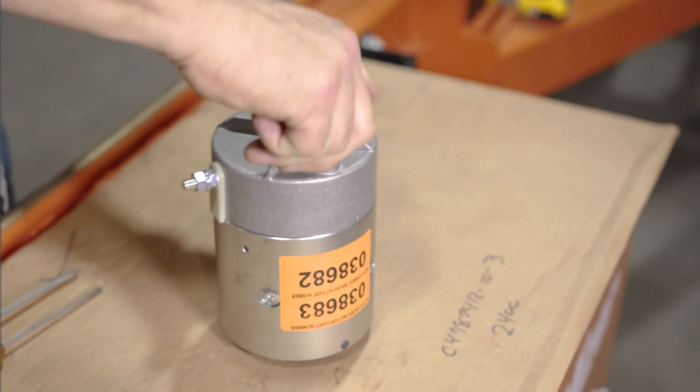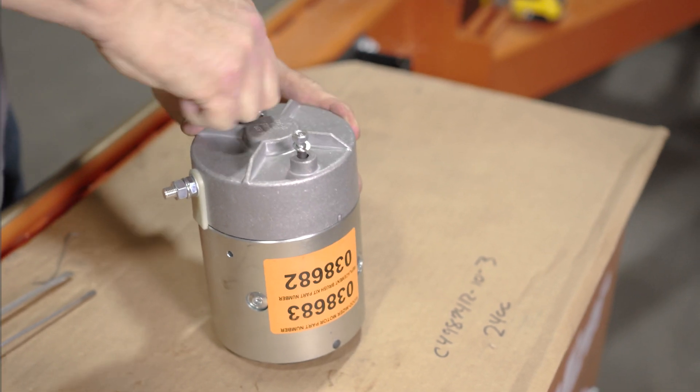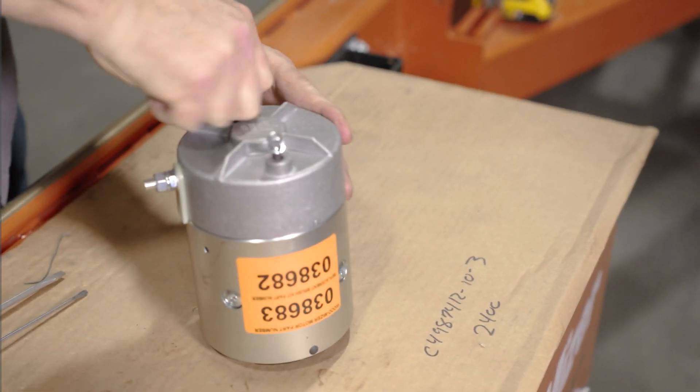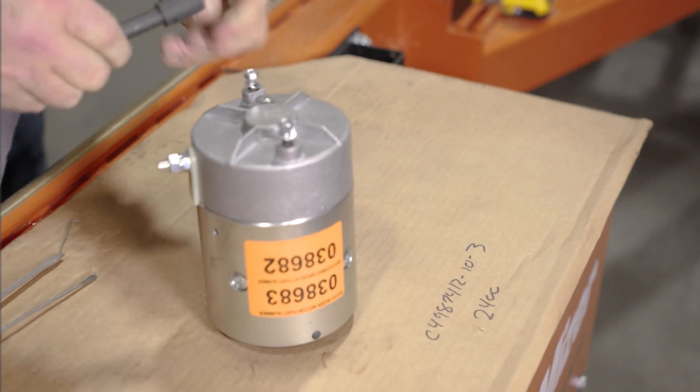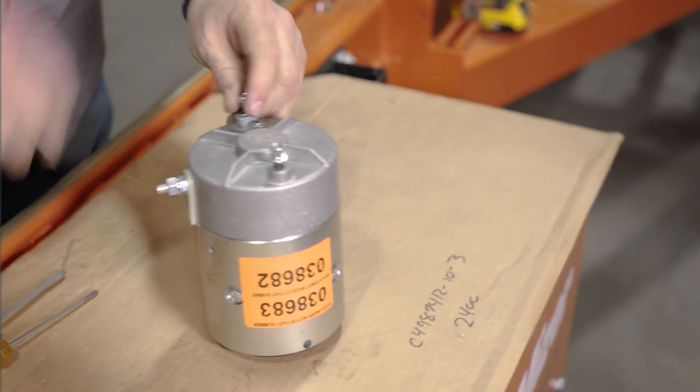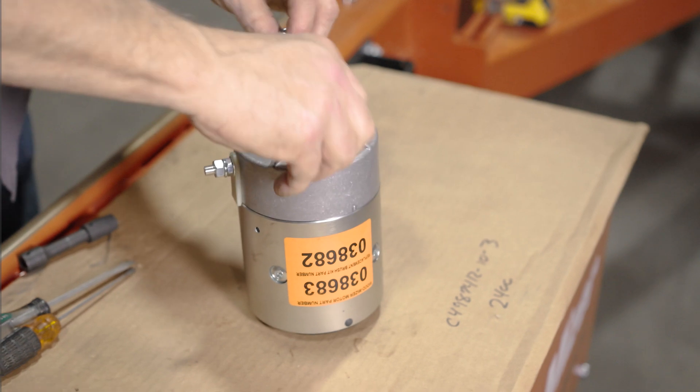The bolts will already be loose because you've taken the motor off of the hydraulic pump. So I'll just slide these out of here.